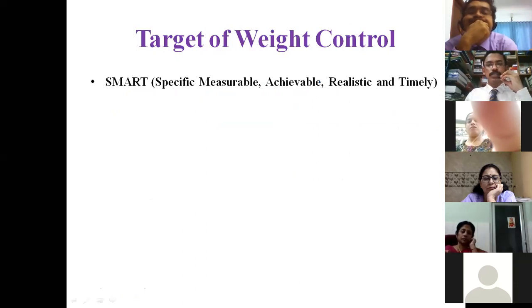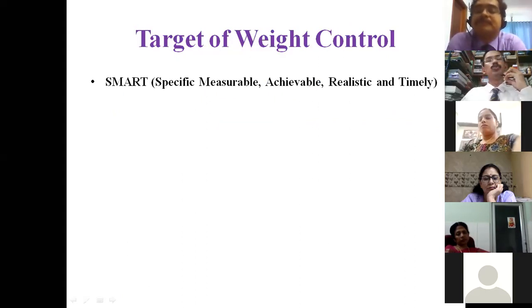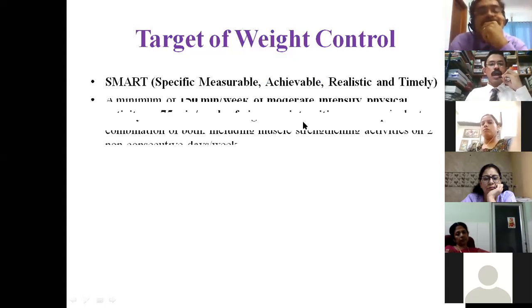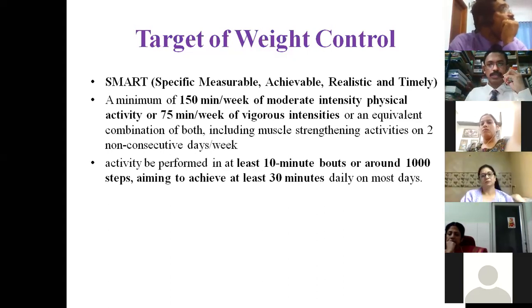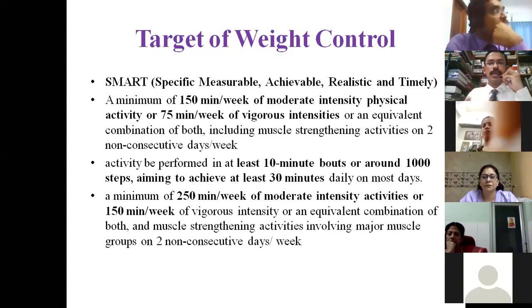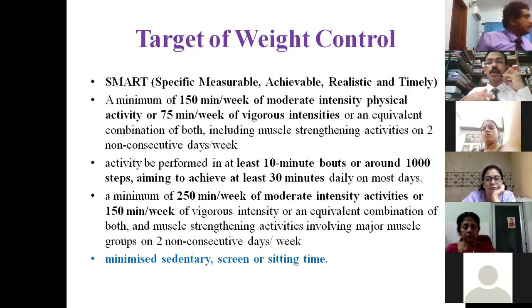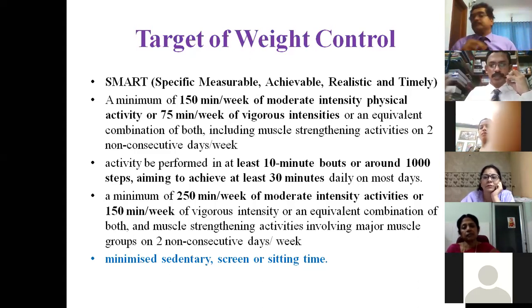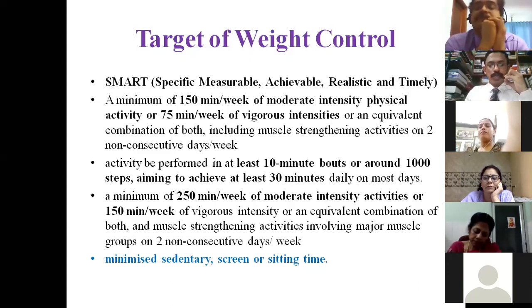The weight loss target should follow the SMART acronym: Specific, Measurable, Achievable, Realistic, and Timely. We cannot tell a 36-year-old PCOS woman to take two years to reduce weight, because as age increases fertility declines. Physical activity advice depends on BMI, exercise tolerability, cardiovascular function, and previous exercise performance. We should advise avoiding sedentary lifestyle — particularly screen time and sitting — as excessive smartphone, television, and computer use, especially during lockdown, decreases calorie consumption.